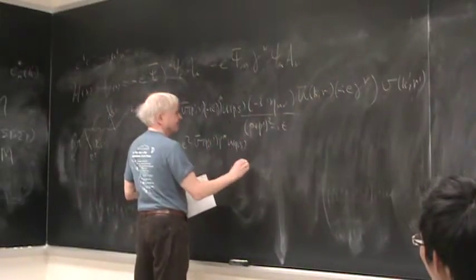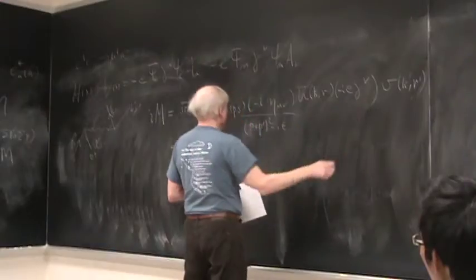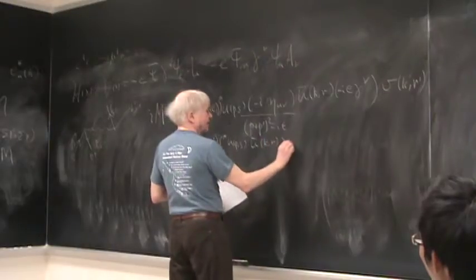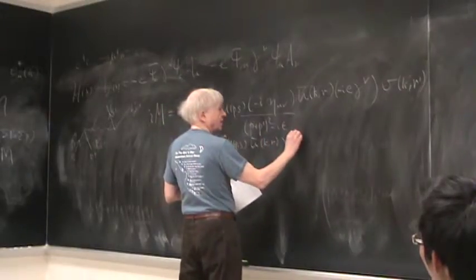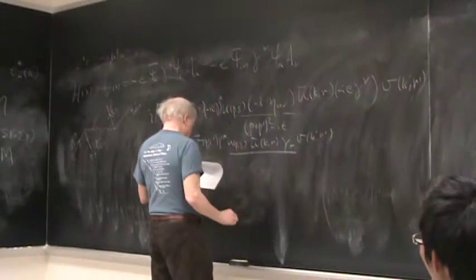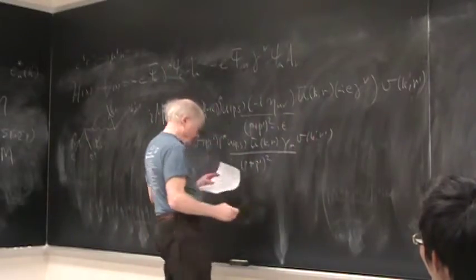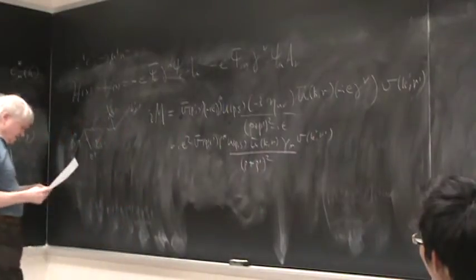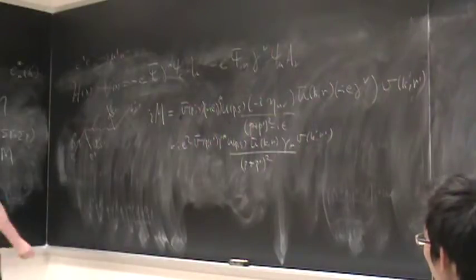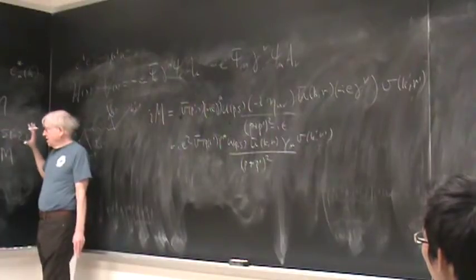What absolute value are we talking about? Well this thing is an amplitude. This S matrix thing is an amplitude, iM. You get a probability, you take the absolute value squared. Now you see what you've got is you've got three minus i e's, which gives you all together i e².